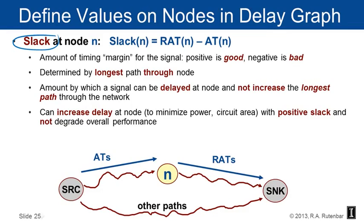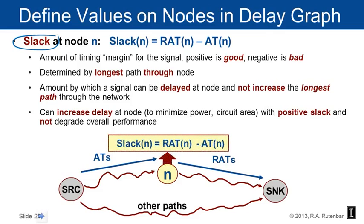The slack is the amount of timing margin for a signal — positive is good, negative is bad. It's determined by the longest path through the node. You can increase the delay at a node with positive slack to maybe minimize power or area without degrading overall performance. Negative slacks are the places where you have real problems — nodes with the most negative slack are on the critical paths and need immediate attention. The key formula: slack equals RAT minus AT.